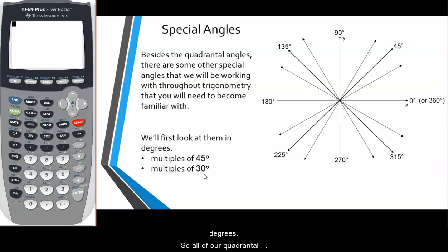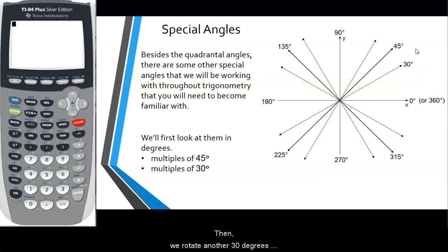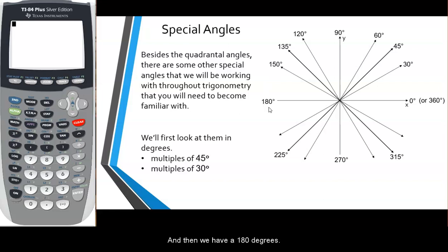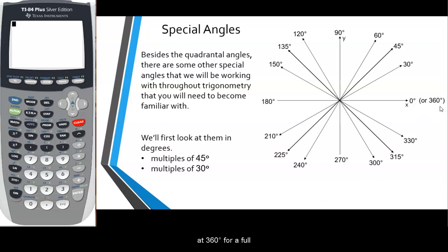Next we have the multiples of 30 degrees. All quadrantal angles are multiples of 30, and there are other angles inside the quadrants that are also multiples of 30. Starting at 0: 30, 60, 90, 120, 150, 180, 210, 240, 270, 300, 330, and then 360 degrees for a full rotation. So there we have all of the multiples-of-30 special angles between 0 and 360 degrees.